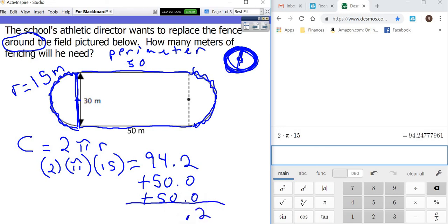So I'm going to say 94.2. Then I'm going to add the first 50 and the second 50, which gives me a total of 194.2 meters. That's how much it would take, or how many meters it would take, to build a fence all the way around the outside.